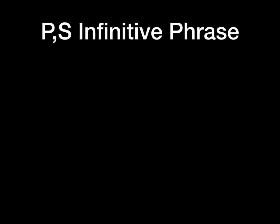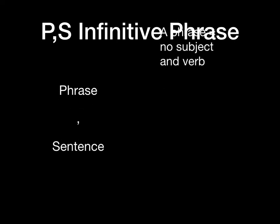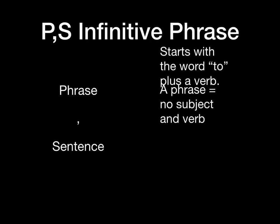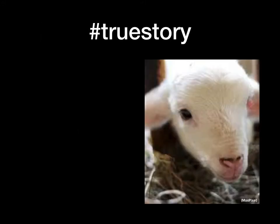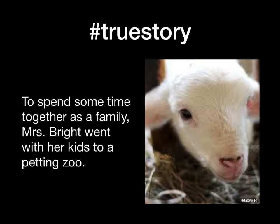Today you are going to learn P comma S — infinitive phrase. That is also simply a phrase, a comma, and a sentence. It's just a group of words without a subject and a verb, but this time it always starts with the word 'to' and adds a verb. To illustrate with a true story — your first P comma S infinitive phrase: 'To spend some time together as a family, Miss Bright went with her kids to the petting zoo.' Does this phrase describe the subject? Yes — Miss Bright is the one wanting to spend time with her family.